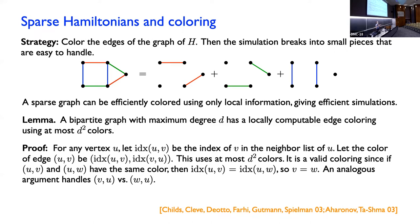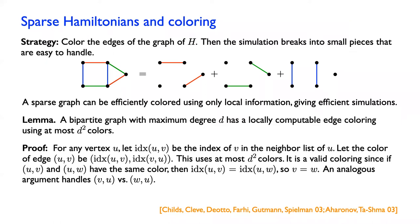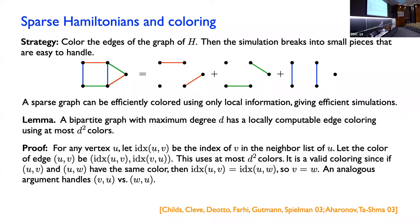What I'm going to do is assign a color to edge (u,v) to be the ordered pair: first the index of v in the neighbor list of u, and second the index of u in the neighbor list of v. That definitely uses only d² colors, because there are at most d neighbors, so these indices run from one through d. And I claim it's a valid edge coloring — you can check that if you look at two edges (u,v) and (u,w) and they have the same color, then it must actually be that v equals w.